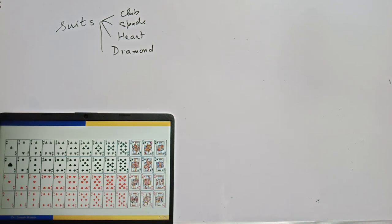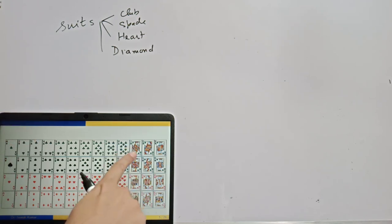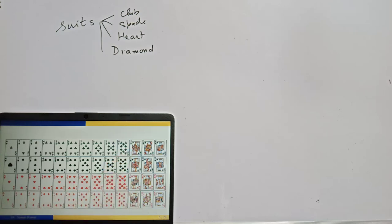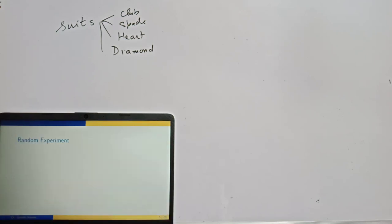If you think color-wise, there are two colors in the cards: black and red. Cards are numbered two to ten, but number 11 is not shown numerically — it's J, meaning jack at number 11, then queen, then king.